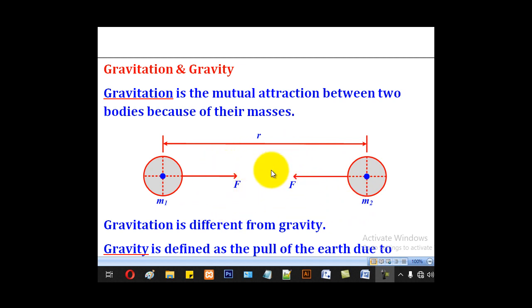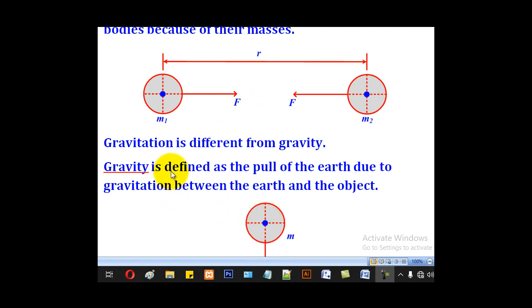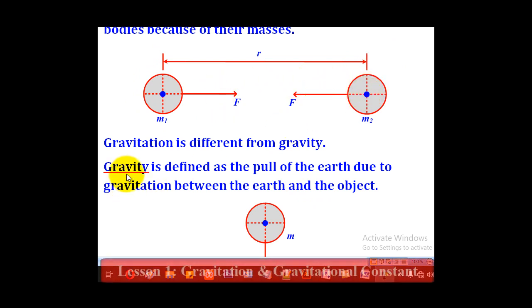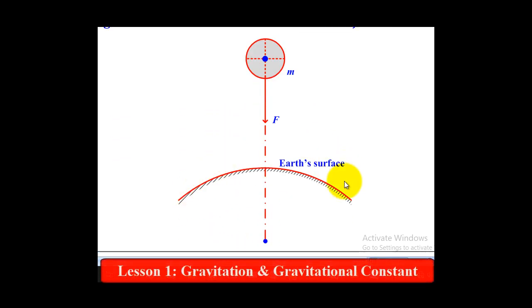This force due to gravitation is called gravitational force, and it is different from gravity. Gravity is defined as the pull of the earth due to gravitation between the earth and the object. So gravitational force is between any two objects, but gravity is between the earth and one object, and that force is vertically downwards.